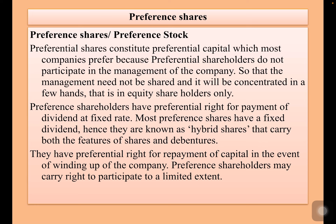Preferential shareholders have preferential right for the payment of dividend at a fixed rate. Most preference shares have a fixed dividend. Hence, they are known as hybrid shares that carry both features of shares and debentures. They also have preferential right for repayment of capital in the event of winding up of a company.